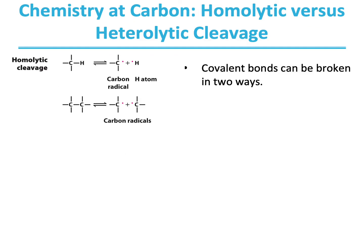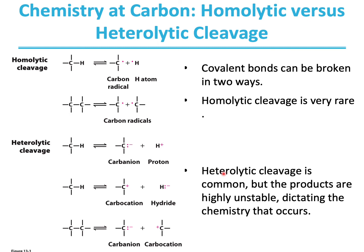Let us consider chemistry at carbon. A covalent bond between two carbon atoms can be broken in two ways. Homolytic cleavage breaks carbon-carbon or carbon-hydrogen bonds into radicals; this kind of cleavage is very rare. Heterolytic cleavage is more common but produces highly unstable products. A carbon-hydrogen bond can cleave into a carbanion and a proton, or a carbocation and a hydride. A carbon-carbon bond can cleave into a carbanion and a carbocation, depending on the groups attached.